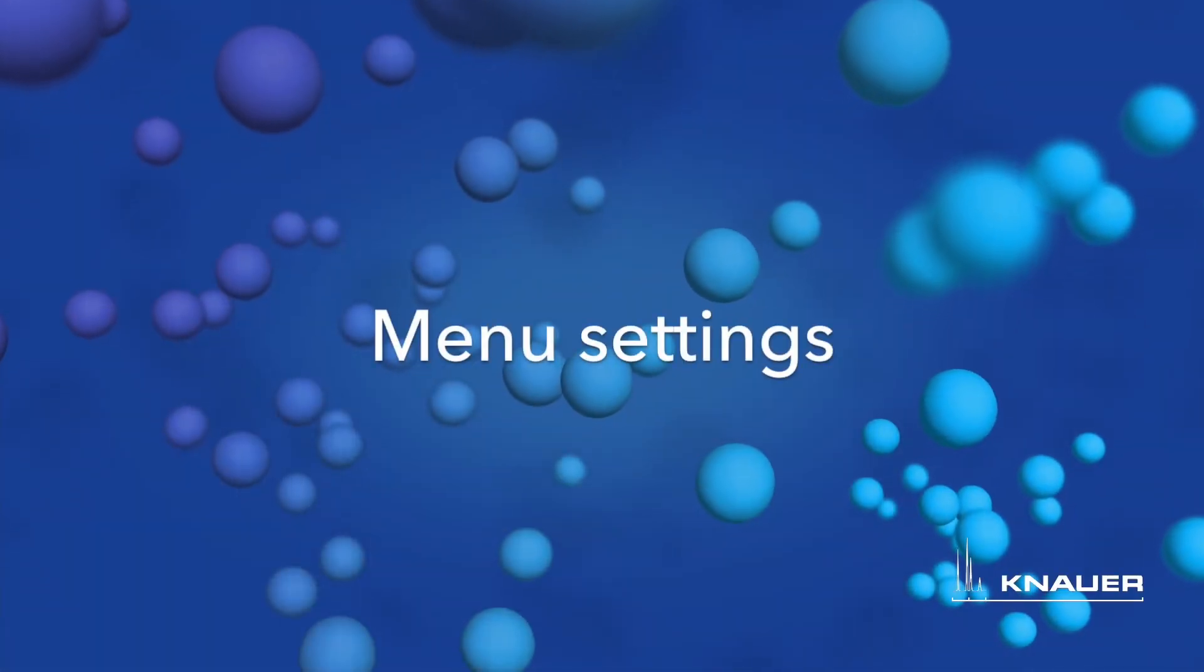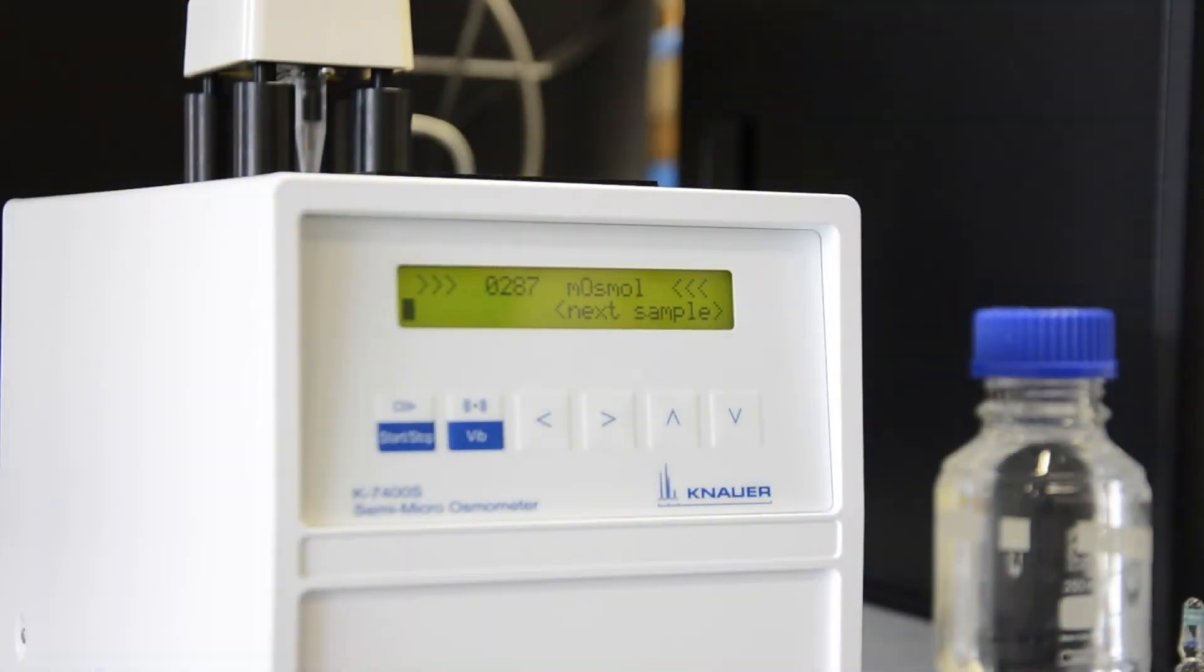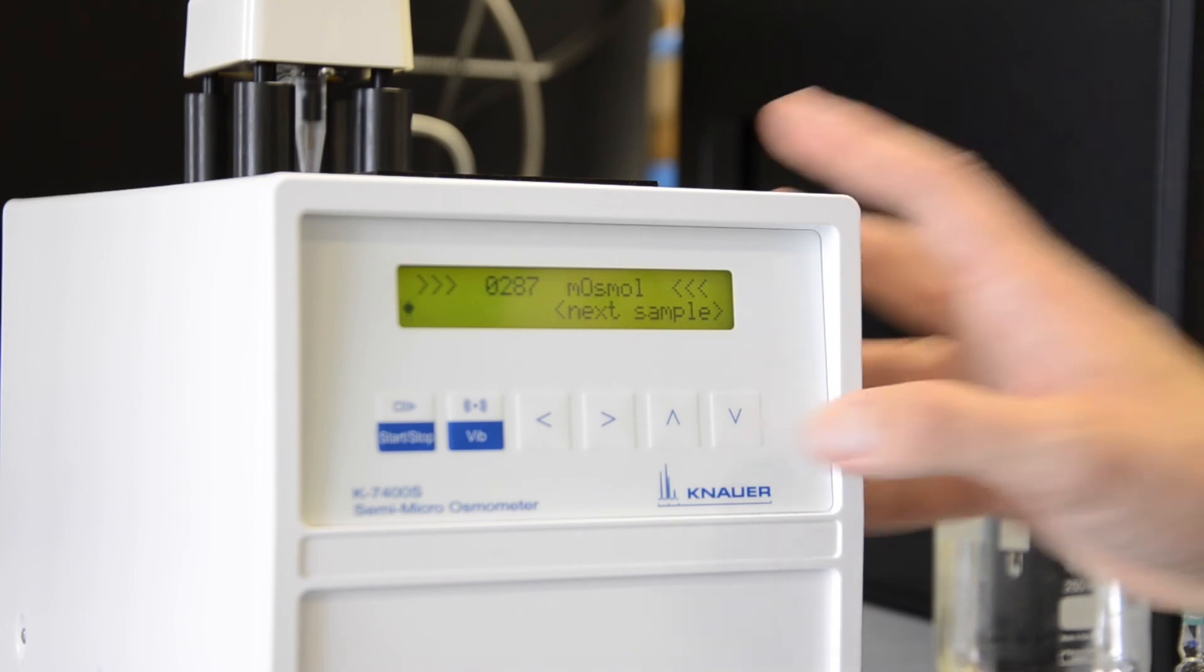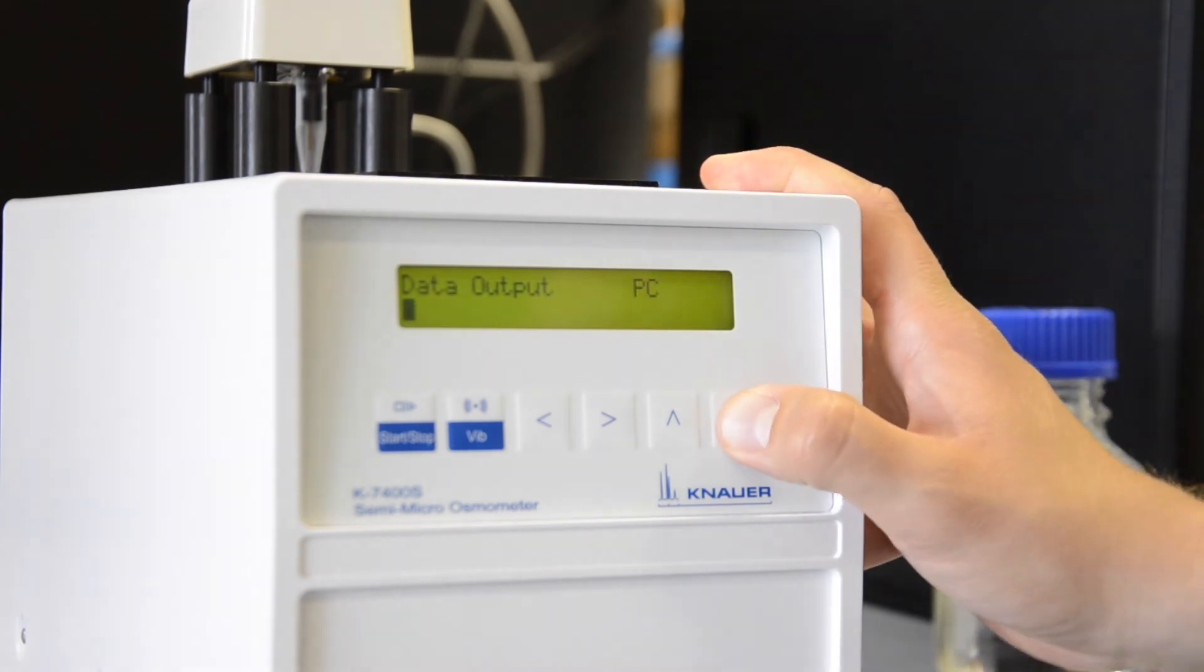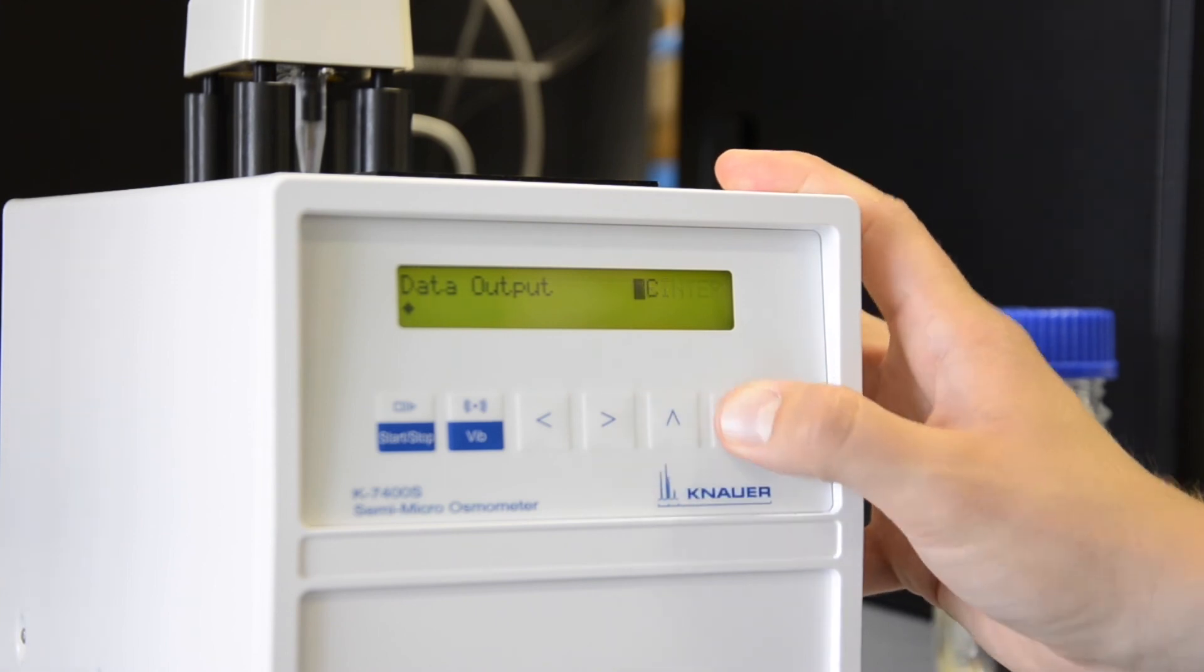Apart from the calibration and the measurement menu there are additional screens available that can be useful while working with the osmometer. In the output menu for example you can choose the output signal depending on if you use a printer or a computer to record your results.